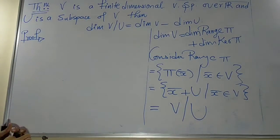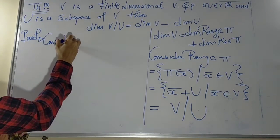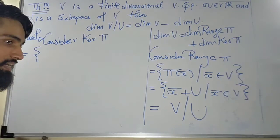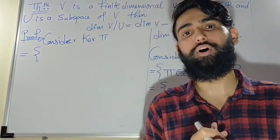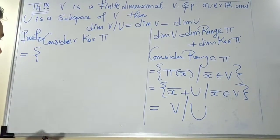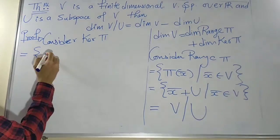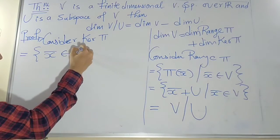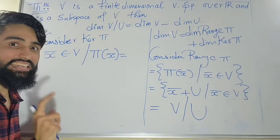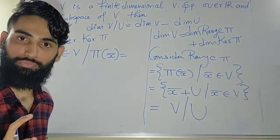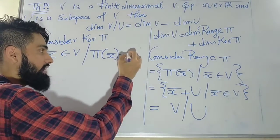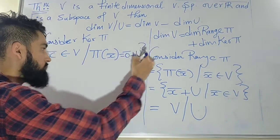Now let's discuss the kernel of π. The kernel is the set of all elements which get mapped to the identity. So the kernel of π contains all those vectors from V such that after applying π on them we get the identity element inside V/U, which is zero plus U.